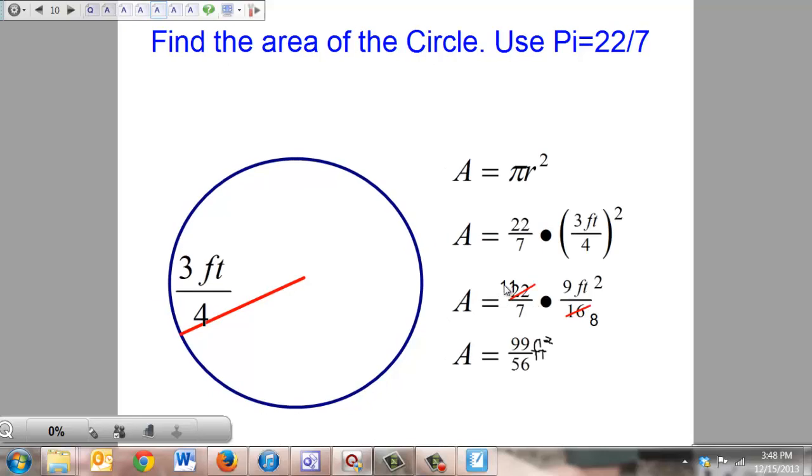Numerator times numerator, denominator times denominator. 11 times 9 is 99, 7 times 8 is 56, and then the feet squared came down.